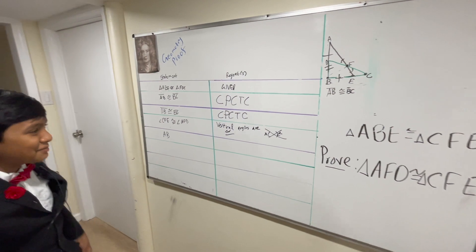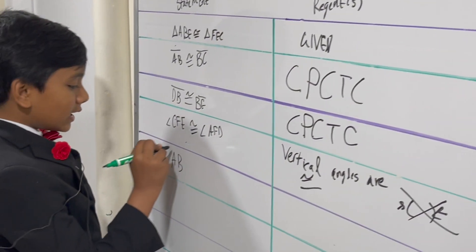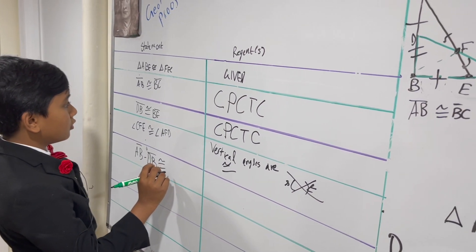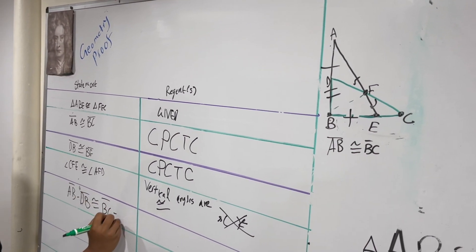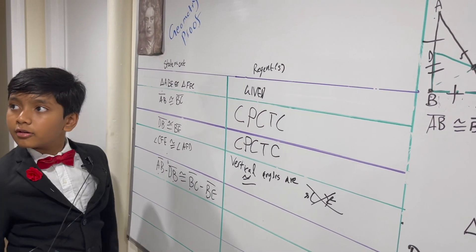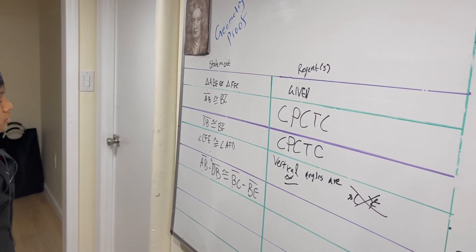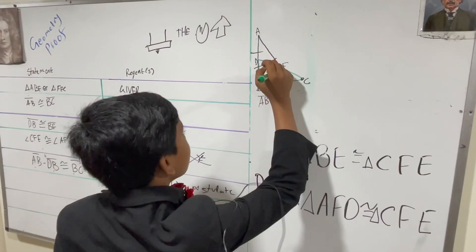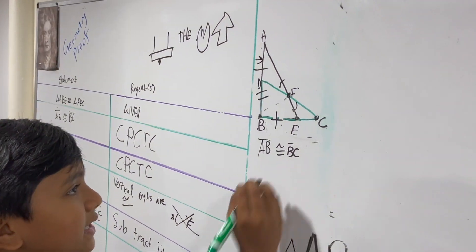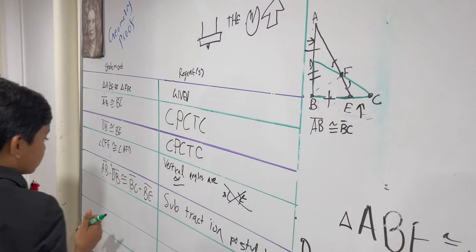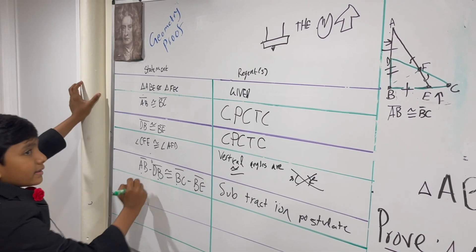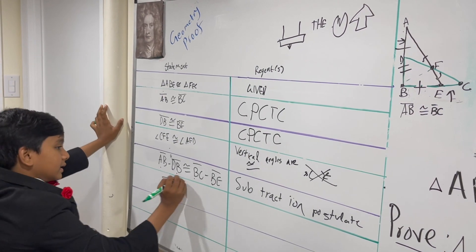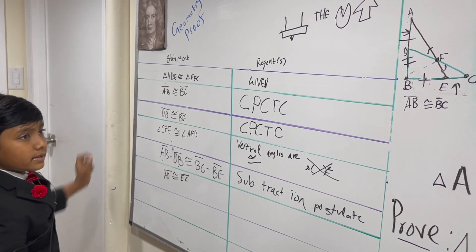Realize that AB minus DB must be congruent to BC minus BE, since these two are equivalent and those two are equivalent — it's like saying x minus y equals x minus y. This is called the subtraction property. AB minus DB equals AD, and BC minus BE equals EC.